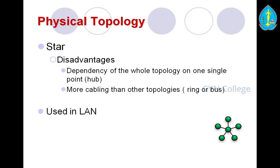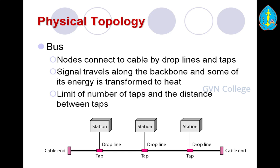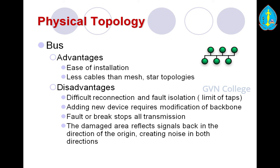The next important concept is bus topology — a multipoint topology where one long cable acts as a backbone. It was used in the design of earlier LANs and Ethernet LANs. Bus nodes are connected to the cable by drop lines and taps. The signal travels along the backbone and some of its energy is transformed to heat. There is a limit on the number of taps and the distance between taps. Bus topology advantages: ease of installation, less cable than mesh and star. Disadvantages: difficult to reconnect and isolate faults; adding a new device requires modification of the backbone; a fault or break stops all transmission; the damaged area reflects signals back, creating noise in both directions.